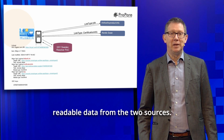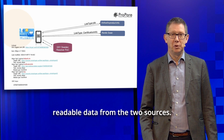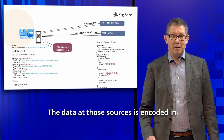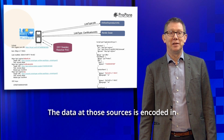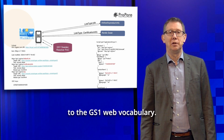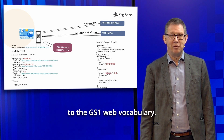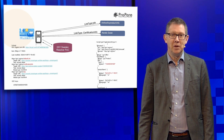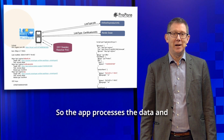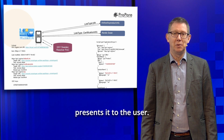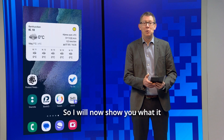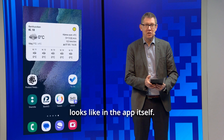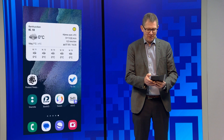You can see on the left how the response from the resolver looks. The app uses the links to get machine-readable data from the two sources, and the data at those sources is encoded in JSON-LD format according to the GS1 web vocabulary. The app processes the data and presents this to the user.